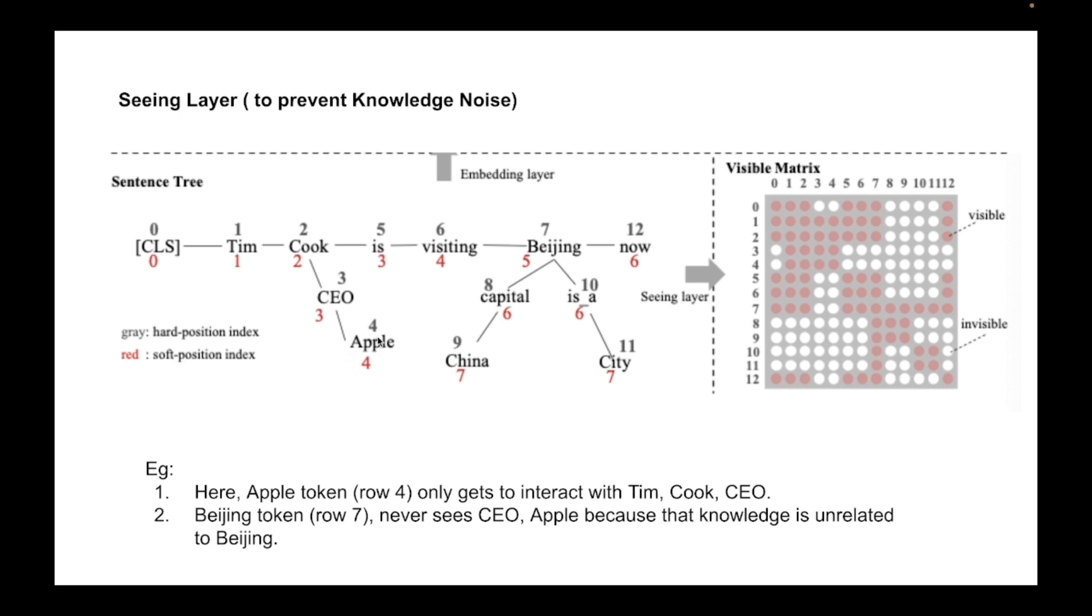Which makes sense here because Apple need not interact with these tokens because Apple was external knowledge that got added to the sentence. Similarly the Beijing token which is at row number seven never sees CEO Apple because that knowledge is unrelated to the token Beijing as per the knowledge graph. So we define this matrix like this.